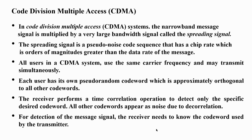In FDMA, we use N number of frequencies for each channel. In TDMA, we use the same carrier frequency but with different time slots. In CDMA, we use the same carrier frequency and same time slots, but we vary the code for individual users — that is called Code Division Multiple Access.